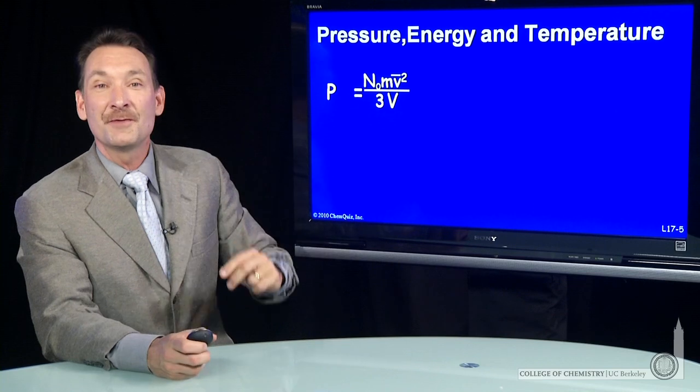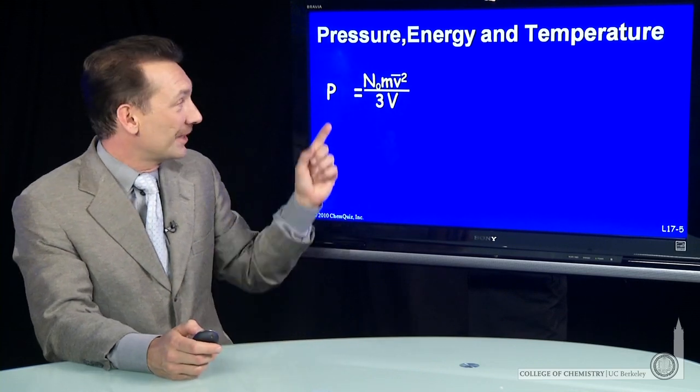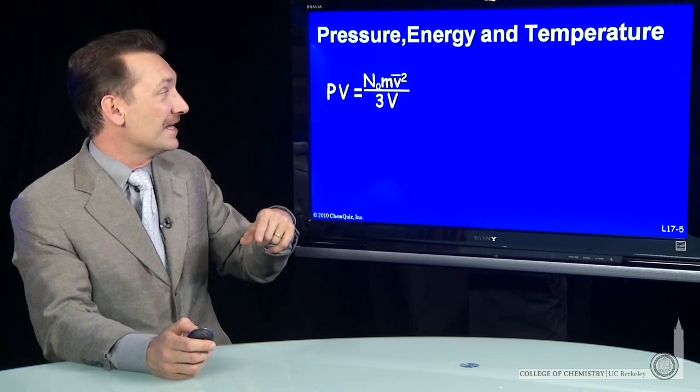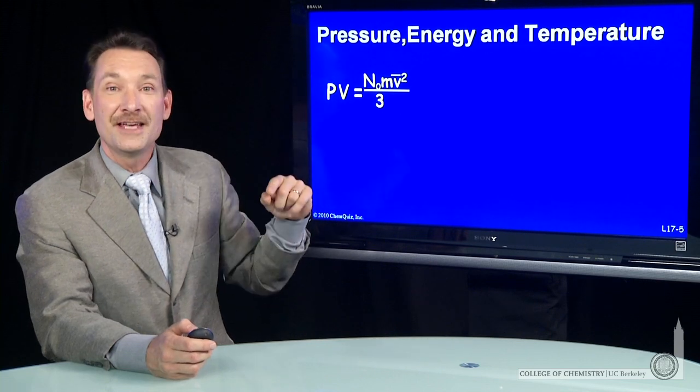Now, for an ideal gas, p times v is a constant. So let's recast this. Let's multiply through by v and look at what the pv constant is.